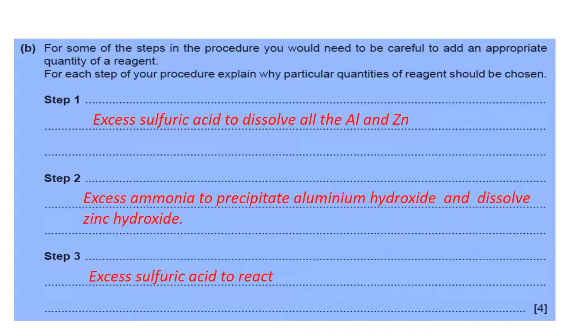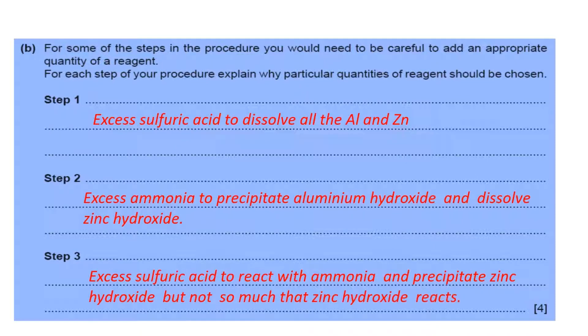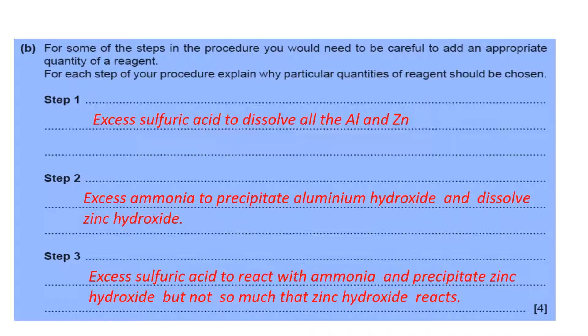And the third step: excess sulfuric acid to react with ammonia and produce precipitate of zinc hydroxide, but not so much that it reacts with zinc hydroxide.